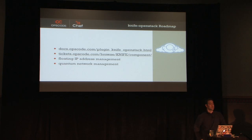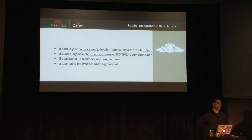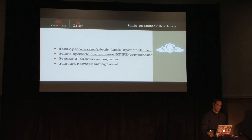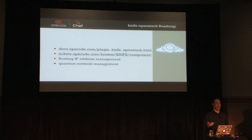The roadmap for Knife OpenStack: the next thing dropping in the next month is managing floating IPs and networks on Quantum. You'll be able to create and destroy networks, and when you boot up a VM you'll be able to say, I've got seven networks and I want to connect to these three. Longer term we'll add support for more OpenStack features — things that you do a lot, we're going to automate.